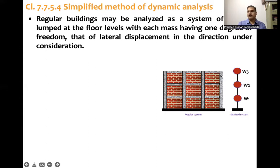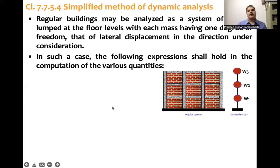in third floor, since there is no above, the terrace is there, so slab weight, beam weight, and half of the column and wall weight in the third floor itself. This is lumped mass idealization. If we do the analysis in such kind of idealization, then the following expressions shall hold good in the computation of various quantities.